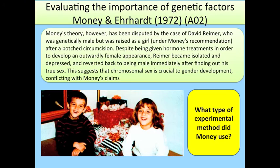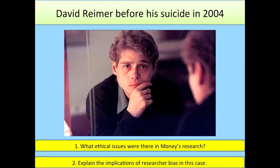Money's theory, however, has been disputed by the case of David Reimer, who is genetically male but was raised as a girl under Money's recommendation after a botched circumcision. Despite being given hormone treatments in order to develop an outwardly female appearance, Reimer became isolated and depressed, and reverted back to being male immediately after finding out his true sex. This suggests that chromosomal sex is crucial to gender development, conflicting with Money's claims.